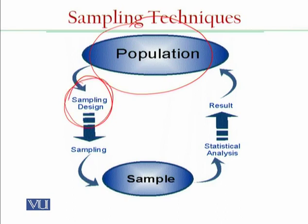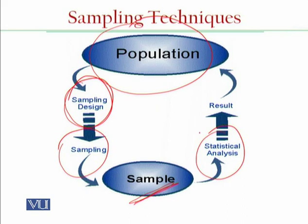After deciding the sampling design, we move towards sampling. We obtain our sample — a small part, a subset of the population. Then we apply further statistical analysis on that sample, which we can also call statistical inference, as studied in the previous semester. Here we apply estimation methods so that we can make estimates about population characteristics and do further planning. The results from statistical inference are then generalized to the population — meaning the results from the sample actually represent the population. That is why we call them estimates about the population.